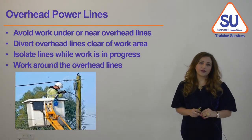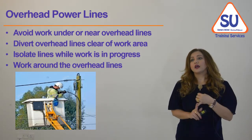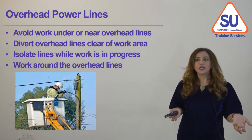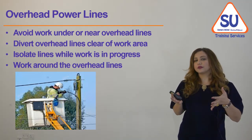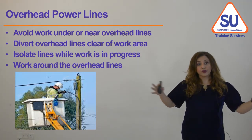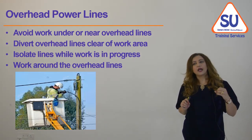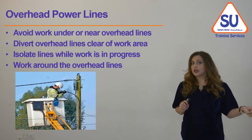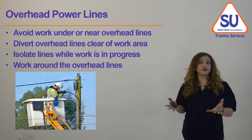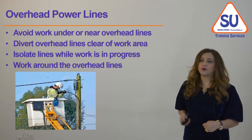Overhead power lines are one of the risks associated with electrical hazards. As much as possible, we should avoid working under or near overhead lines. If that is not possible, we need to divert the overhead lines, clear off work areas, or otherwise isolate the lines while work is in progress. If that is also not possible, we must work around the overhead lines but take all precautions required to provide safety for our workforce.